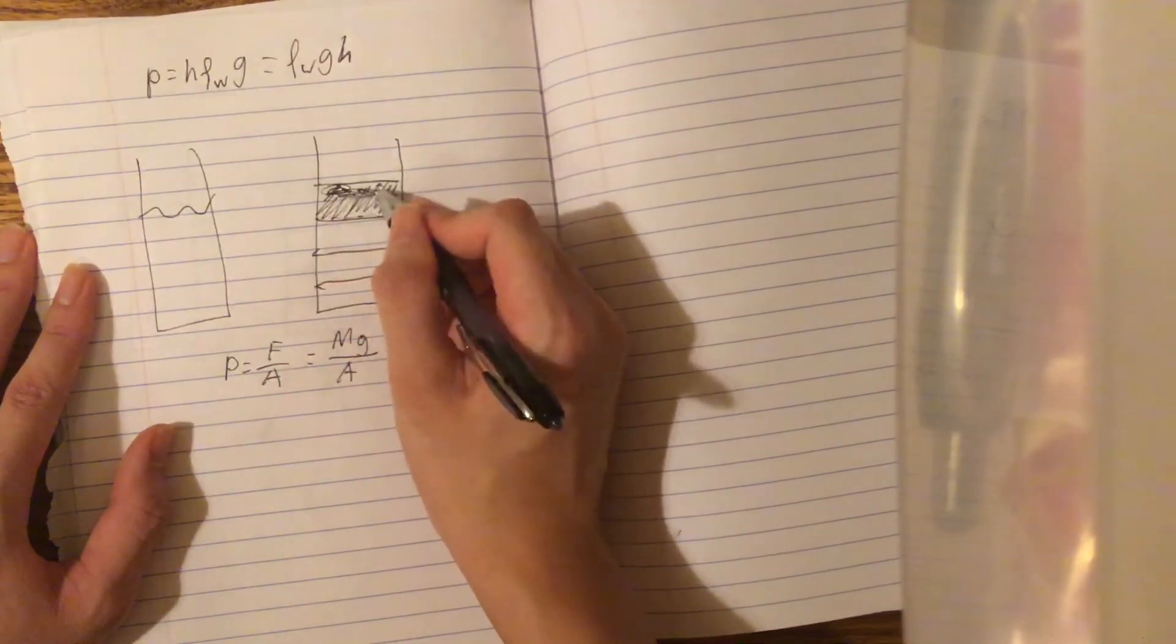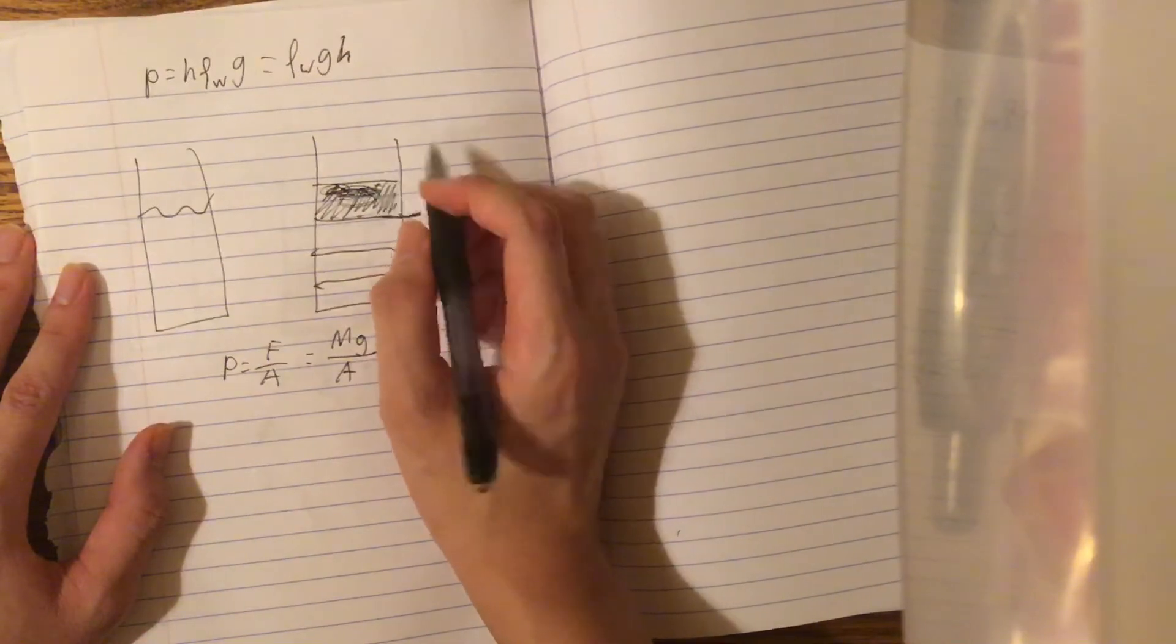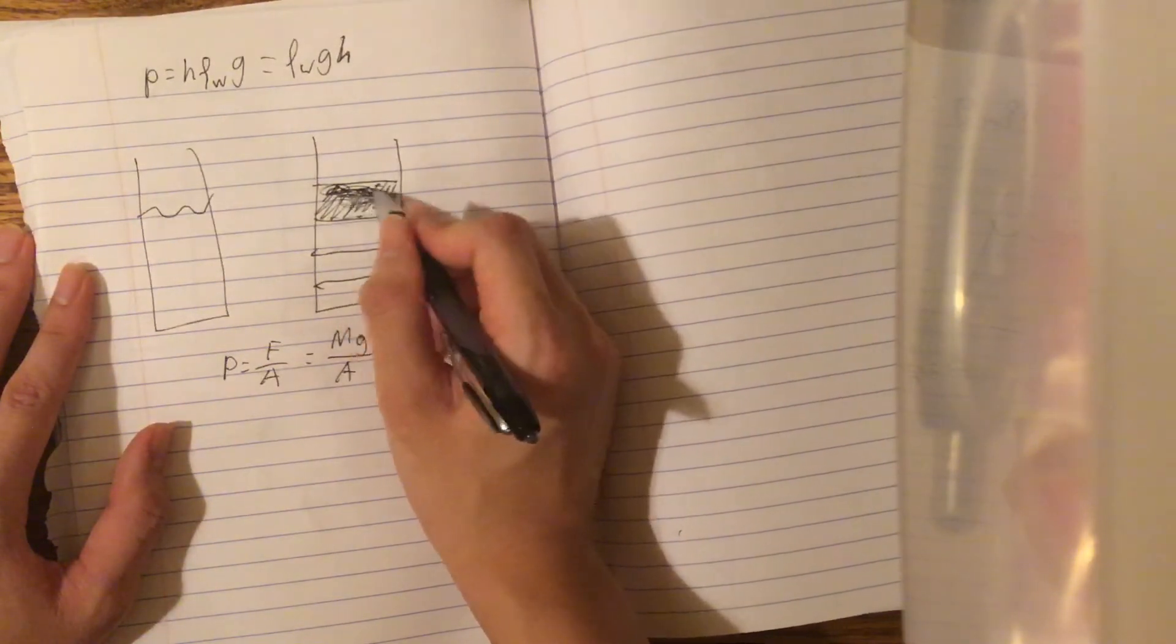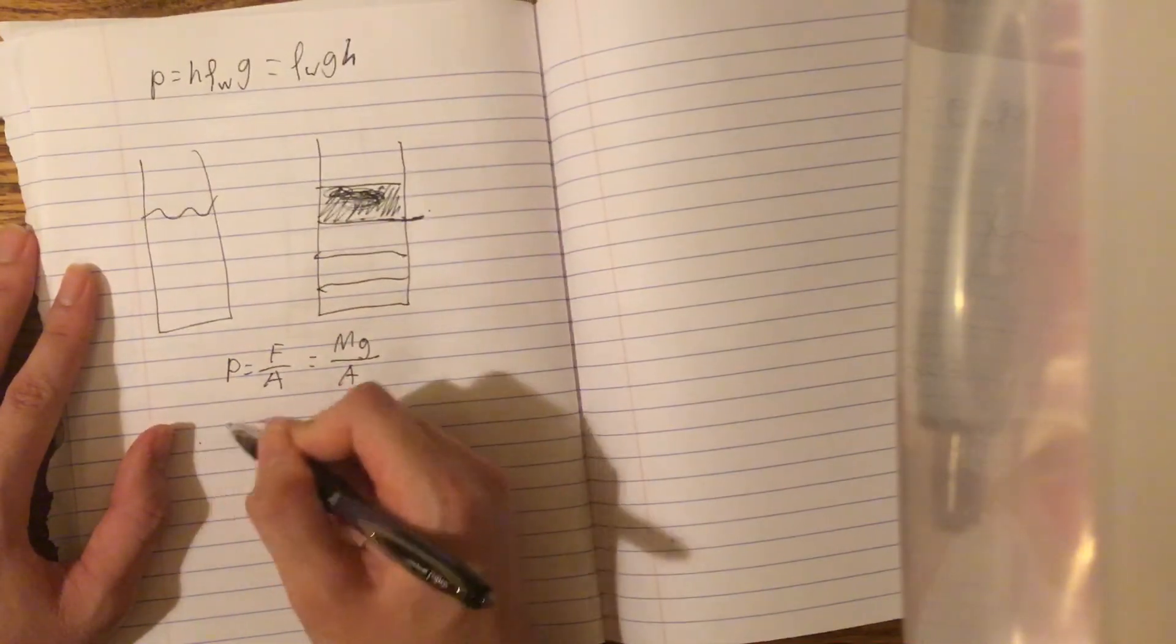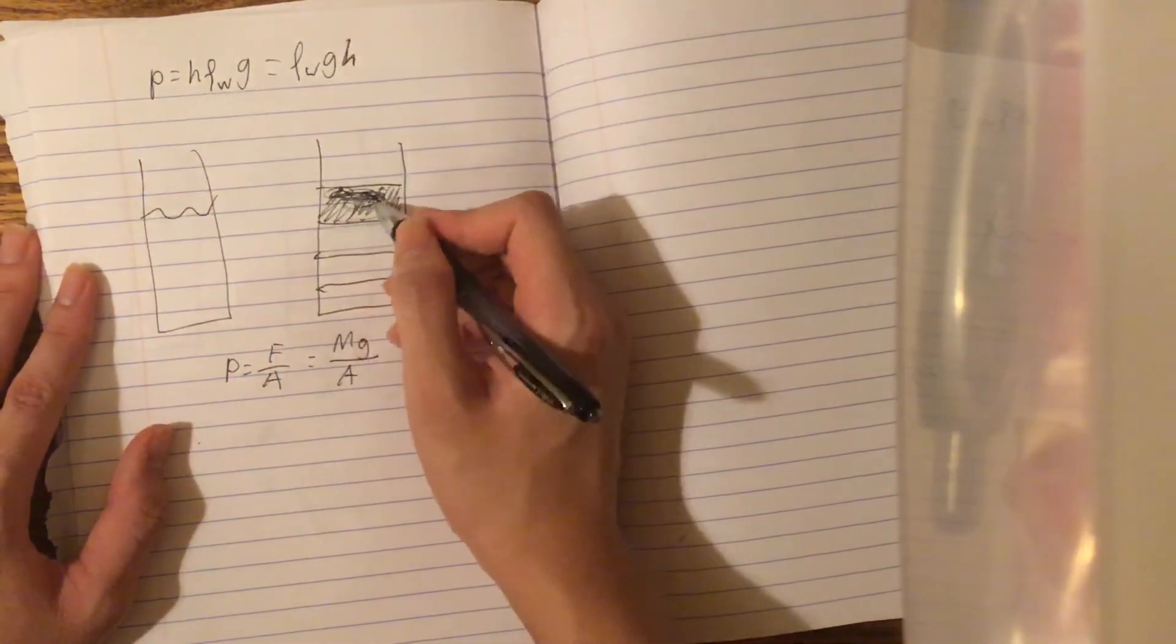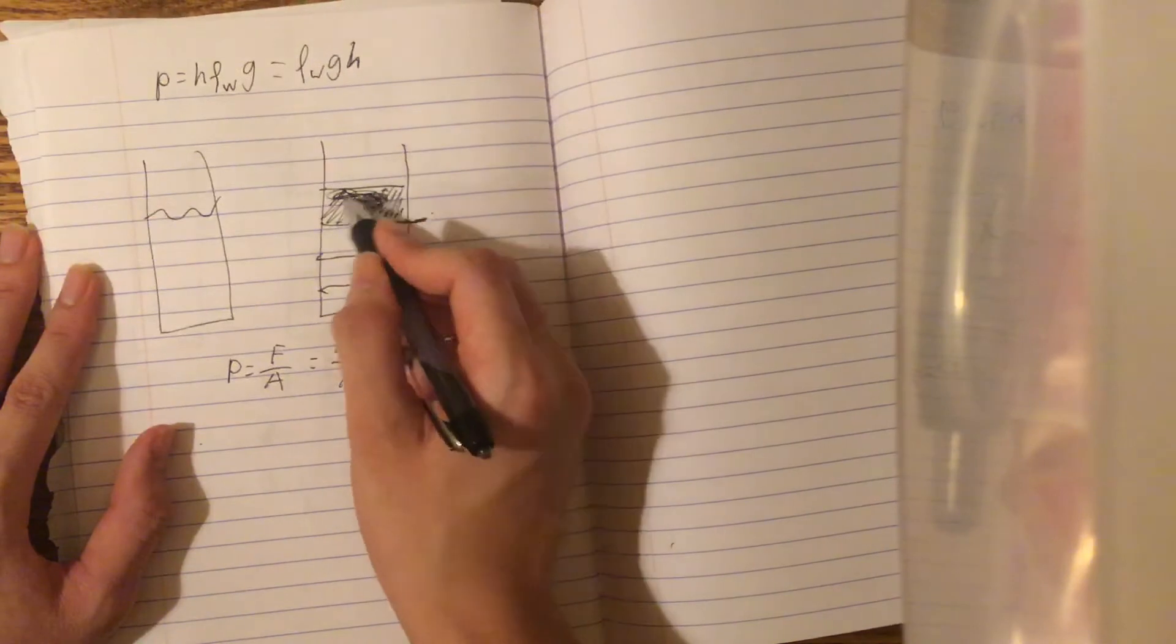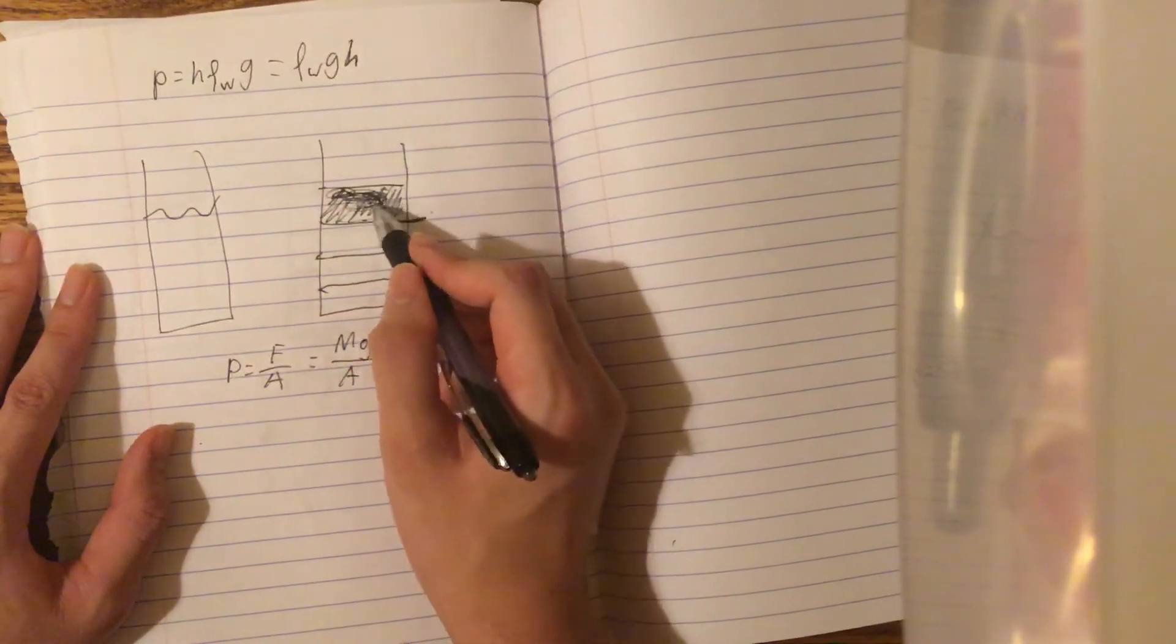However, we know that the density of this block here, or no, let's just think of this as water again. We're treating this as one water block. So we know the density of this water block is ρw, right? And ρw equals, well, density in general just equals mass over volume.